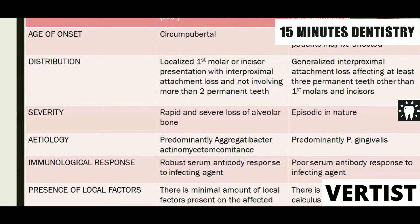Aggressive periodontitis is classified as localized and generalized aggressive periodontitis. Localized aggressive periodontitis is localized to incisors and first molars, with age of onset circumpubertal — around the age of puberty. Generalized aggressive periodontitis occurs under the age of 30 years, affecting three or more permanent teeth other than first molars and incisors. The etiology of localized aggressive periodontitis is predominantly Aggregatibacter actinomycetemcomitans (AA), and generalized aggressive periodontitis is predominantly P. gingivalis. Immunological response shows robust serum antibody in localized and poor serum antibody response in generalized.